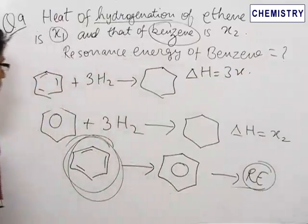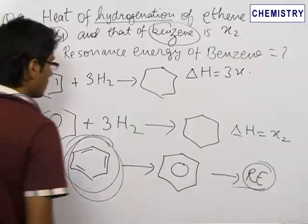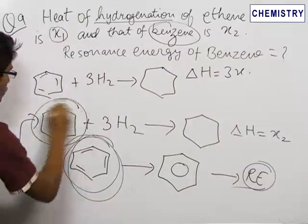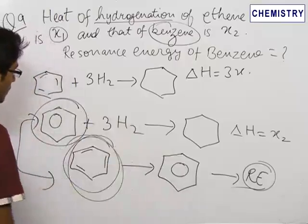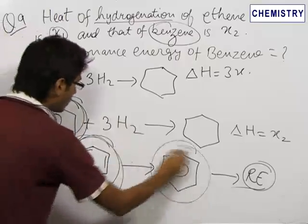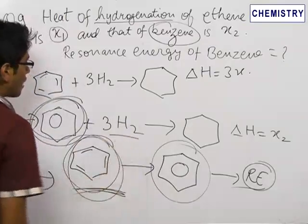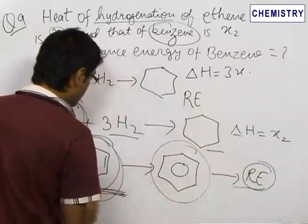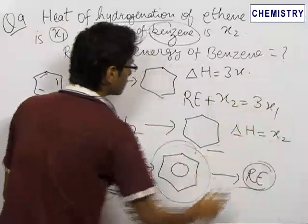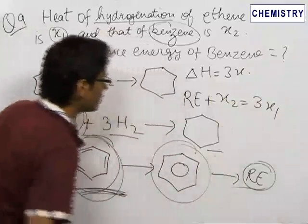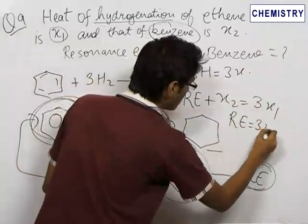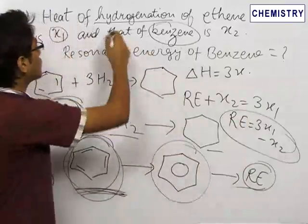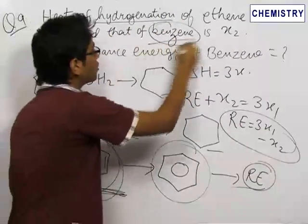Now, we need to find the resonance energy. In order to find the resonance energy, we add these two equations. On adding these two equations, the non-resonating benzene part gets cancelled out and we get: non-resonating benzene plus three hydrogen gives cyclohexane, so the enthalpies also get added. Therefore, resonance energy plus x2 equals three x1, so the resonance energy comes out to be three x1 minus x2. The final answer is: the resonance energy of benzene is 3x1 − x2, where x1 is the hydrogenation energy of ethene and x2 is the hydrogenation energy of benzene.